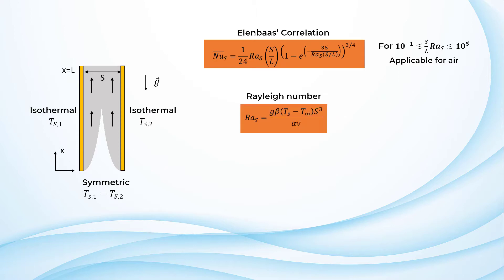The Rayleigh number used in this correlation can be calculated using the following relation where the characteristic length S is the separation between the two plates. The average Nusselt number is given by the equation shown here.